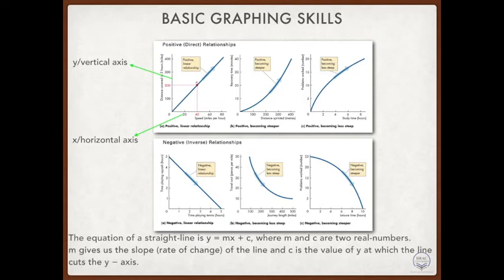The straight vertical line that you can see on the graph is called the y or vertical axis, and the horizontal line is the x-axis, both pointed by a green arrow on the slide. Inside the graph, the blue line is called the curve — it is called the curve regardless of the shape. Let it be a straight, bent, or curved line; we will call all of them curves.